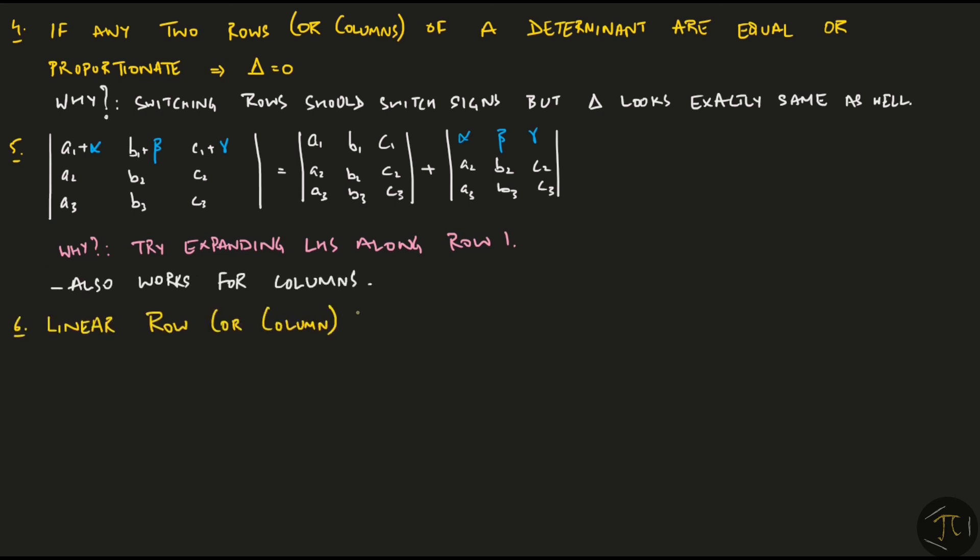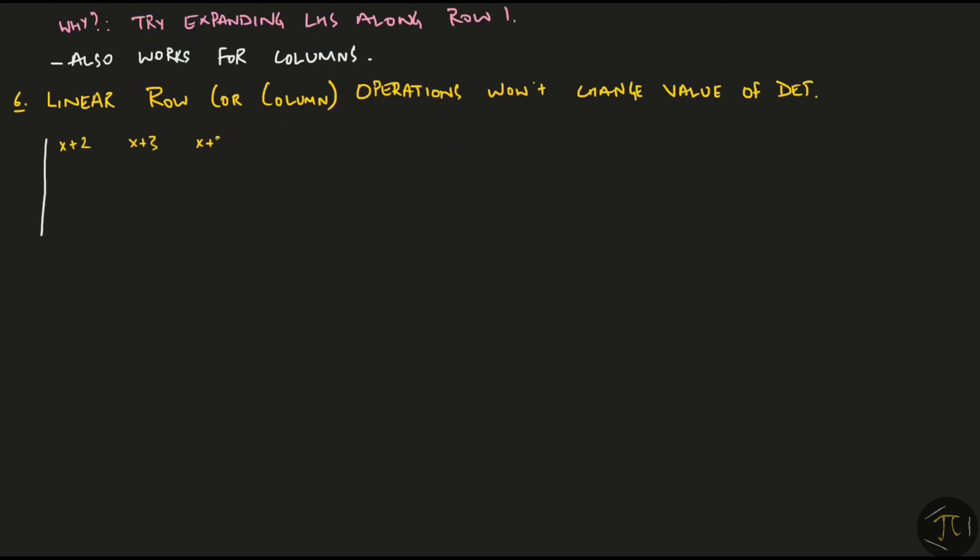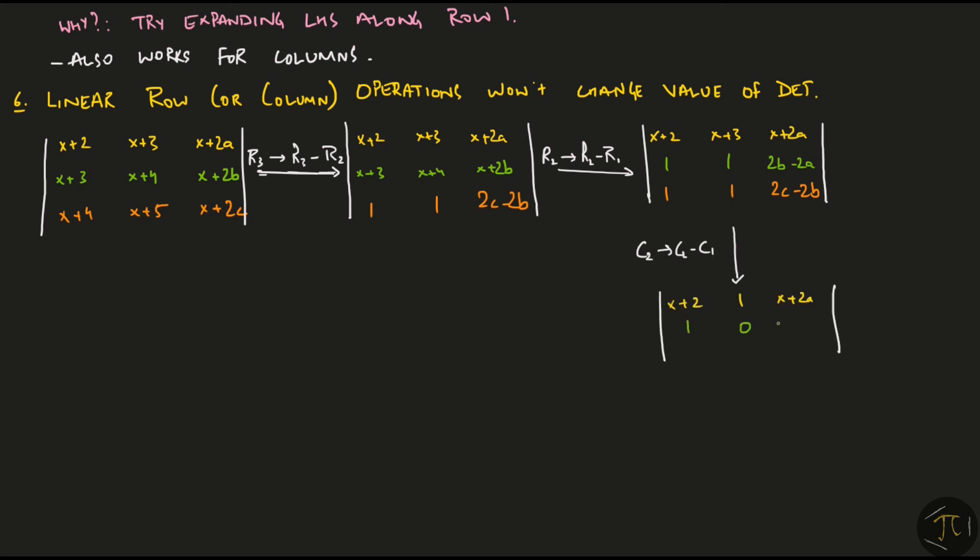The sixth property is that linear row or column operations won't change the value of the determinant. Say you have this complex looking determinant with the XES and ABCs and we perform the row operation R3 goes to R3 minus R2. This would reduce the last row to a simpler form. In a similar fashion, we carry out the next row operation. But now we carry out a column operation, C2 goes to C2 minus C1. We do this to obtain two zeros in column 2. Now expanding along C2, we get the following simplified expression. If we were given that ABC are in arithmetic progression, that is B minus A is equal to C minus B, this expression would simplify to 0. I picked this question from the ISI 2011 MSQE exam.